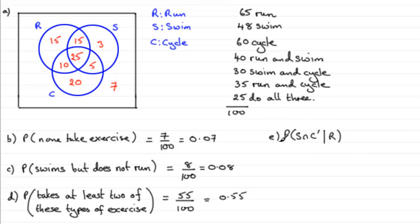I've written this in symbolic notation here. The line means given that. So we're told that Jason runs, we're given that he runs, and we've got to find the probability that he swims, hence S, and he doesn't cycle. So it's not C.